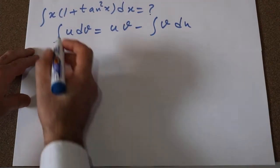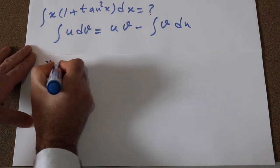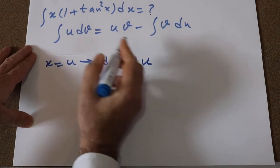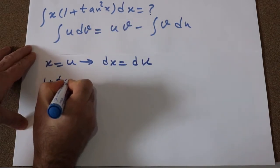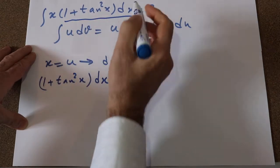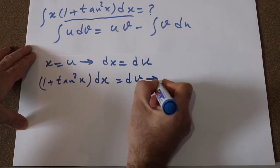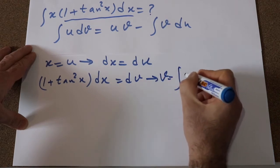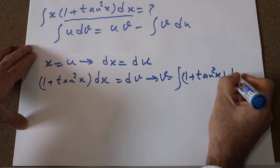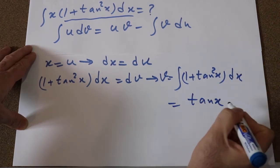So we can define here x as u, therefore dx will be equal to du. And we can define (1 plus tangent square x) dx, the rest of this integral as dv, therefore v will be equal to integral of (1 plus tangent square x) dx, which is equal to tangent x.